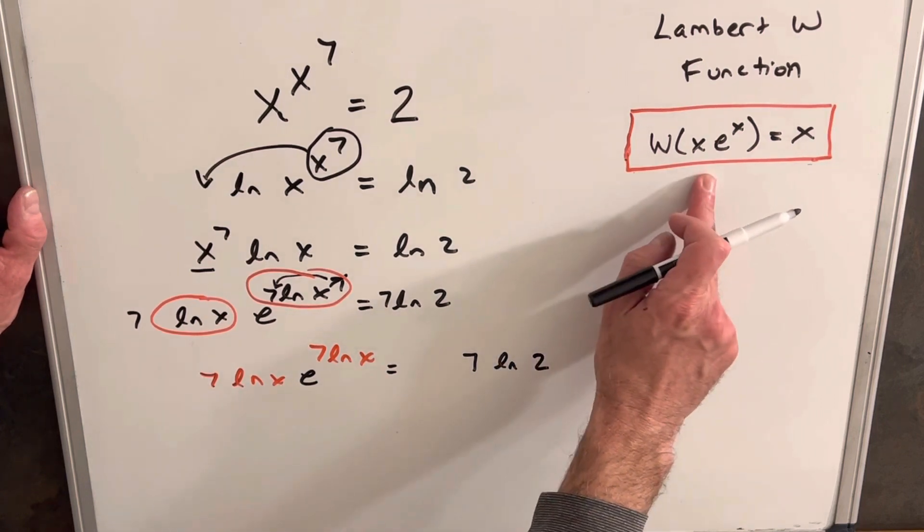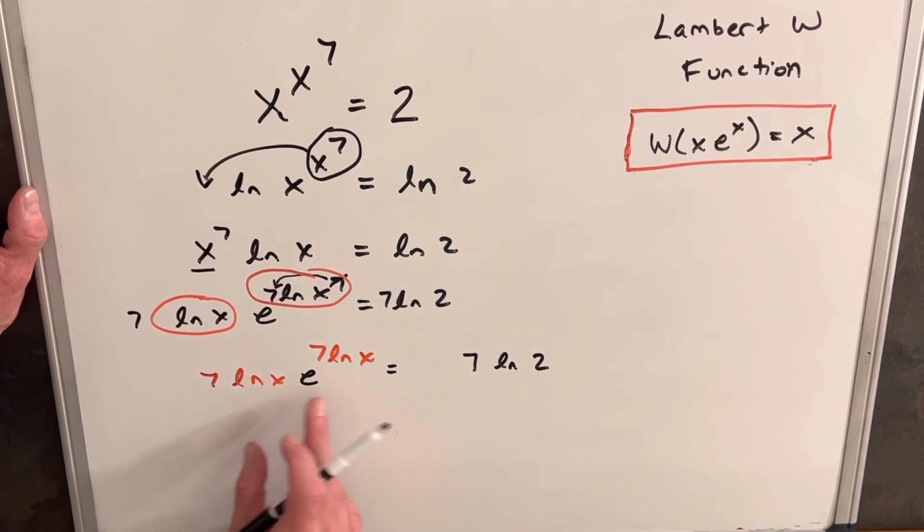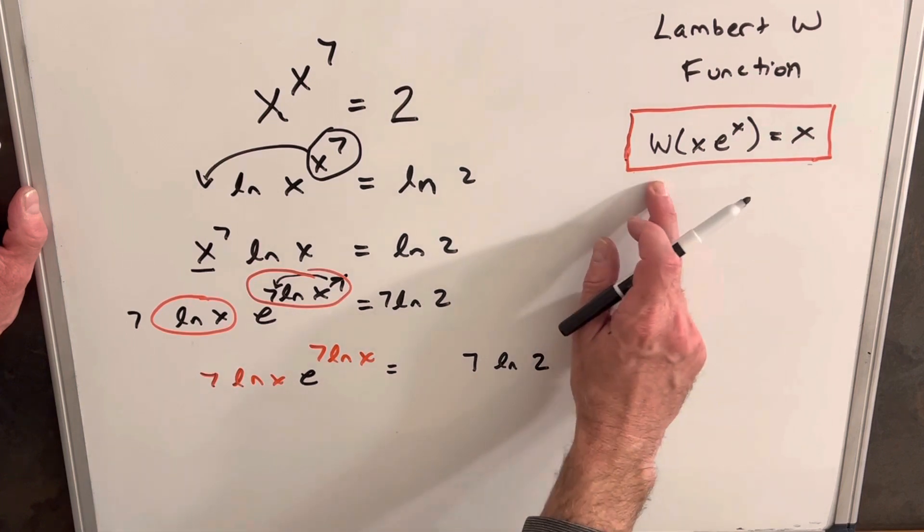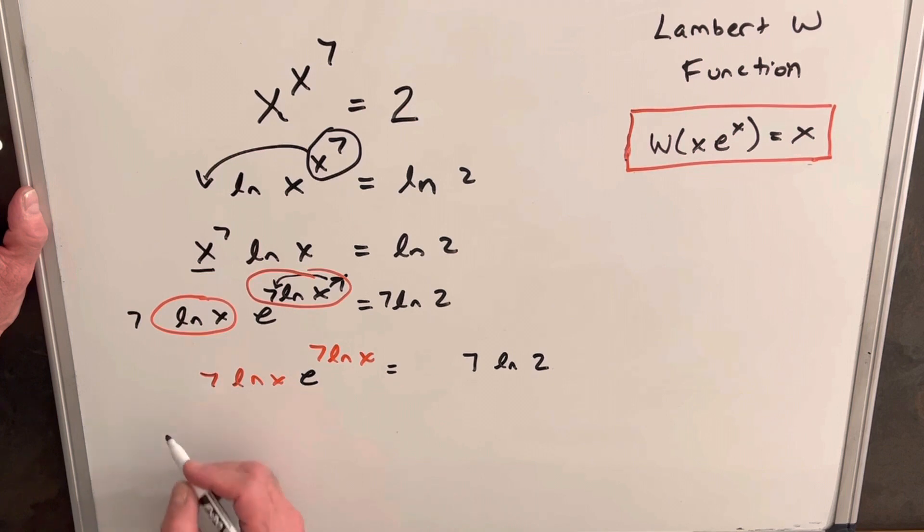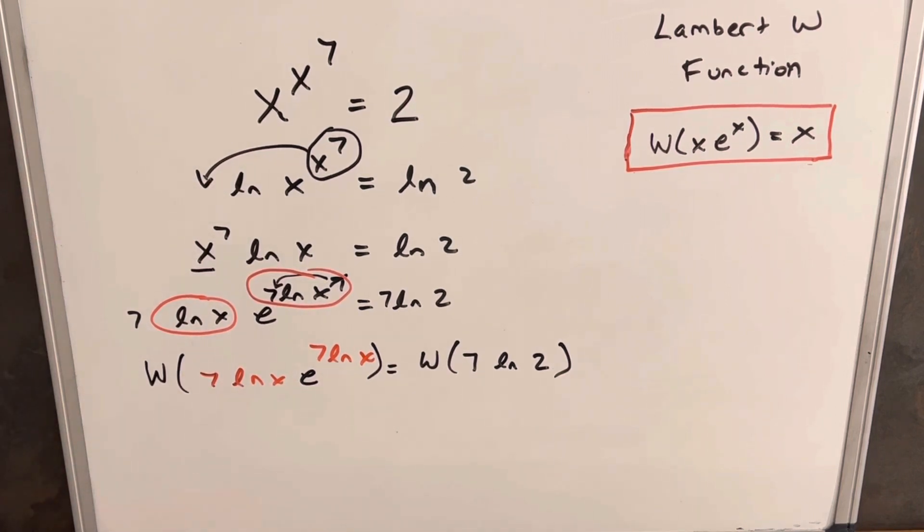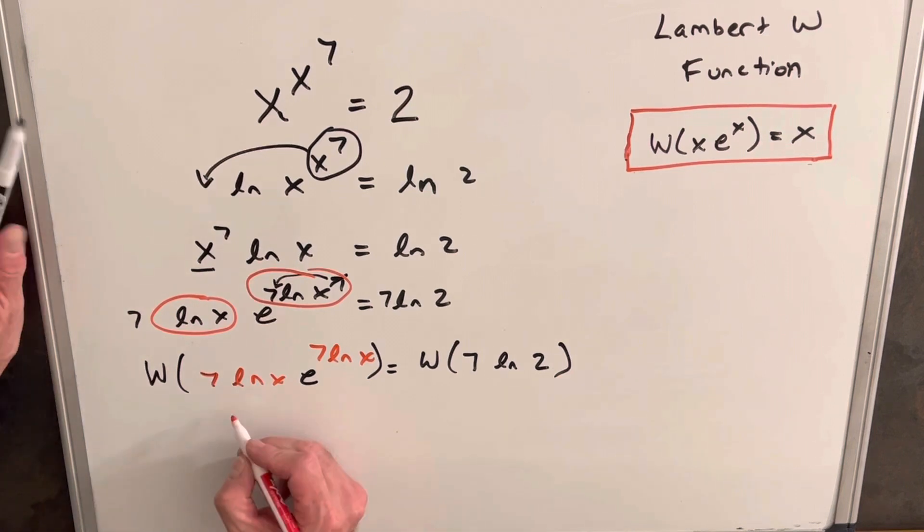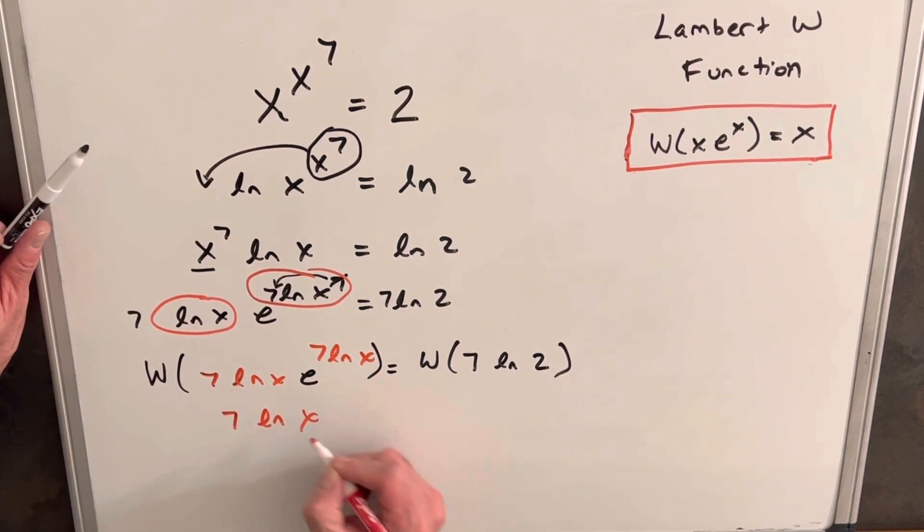So it matches exactly this format. If we could do like a u substitution, if we call this u, then we would output the same u. So what we can do now is take the Lambert W function on both sides. So we'll take it here on the left, and we'll take it on the right. And this is going to just output our red value, so we'll have 7 ln x.